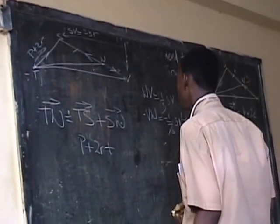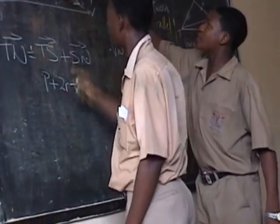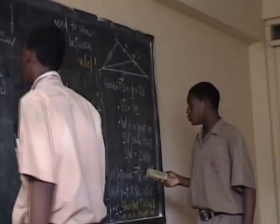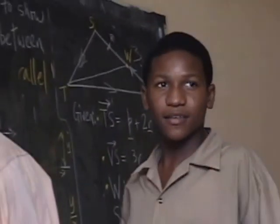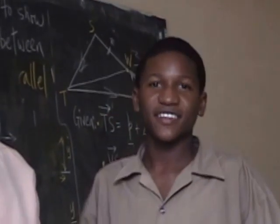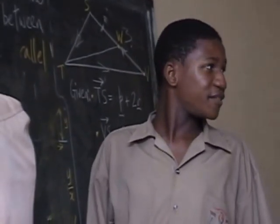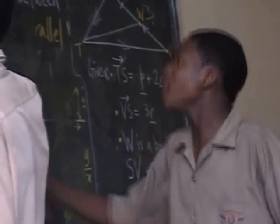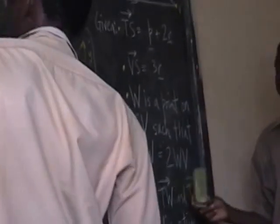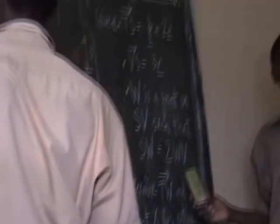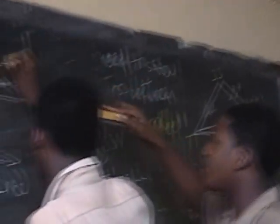Teacher asks: 'So what is WV in terms of R?' Student answers: 'WV is one third SV — negative 3R times a third.' Teacher: 'So genius, why didn't you say that long time? And what is the result?' Student: 'Negative 3 over 3, negative 3R.' Teacher: 'Which is? Negative 1R.' He corrects: 'It's either negative R or negative 1R — but negative 1R sounds illiterate. Say negative R.' They confirm: 'Negative R.'